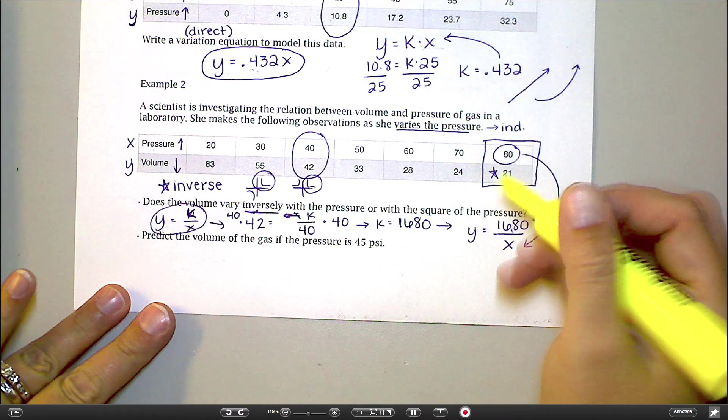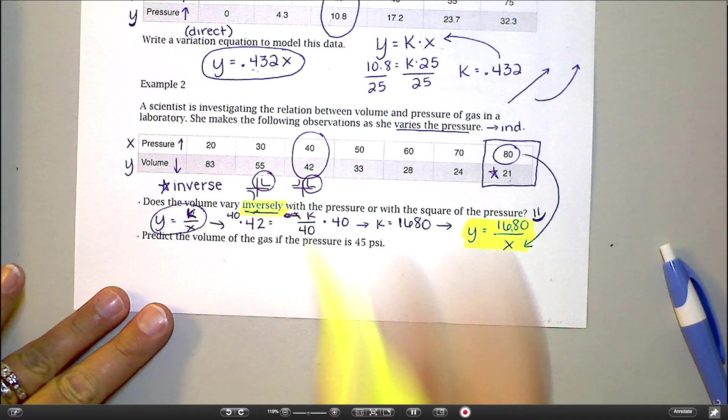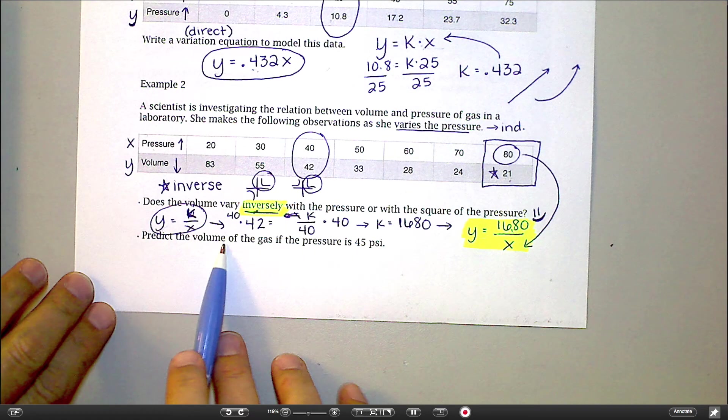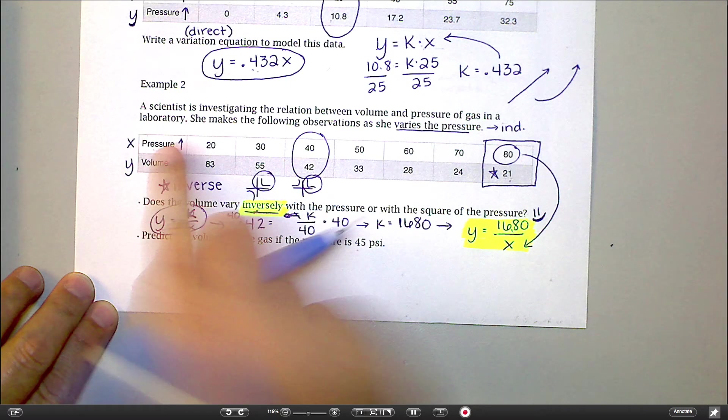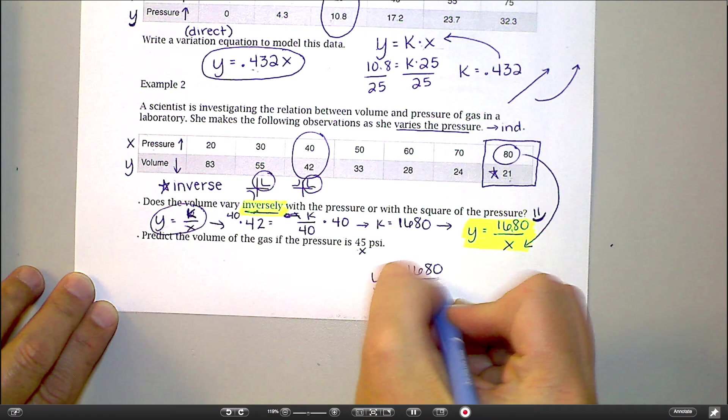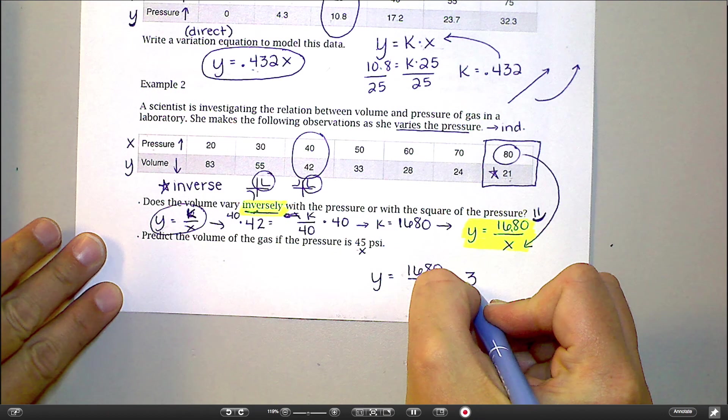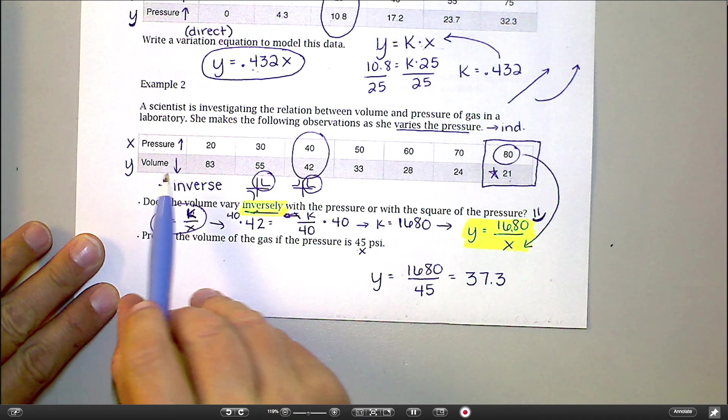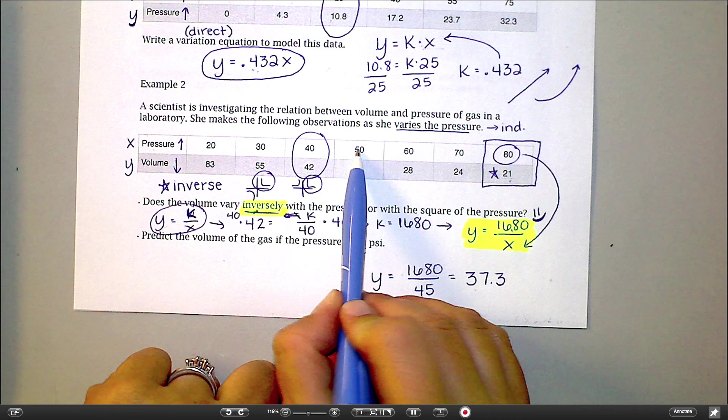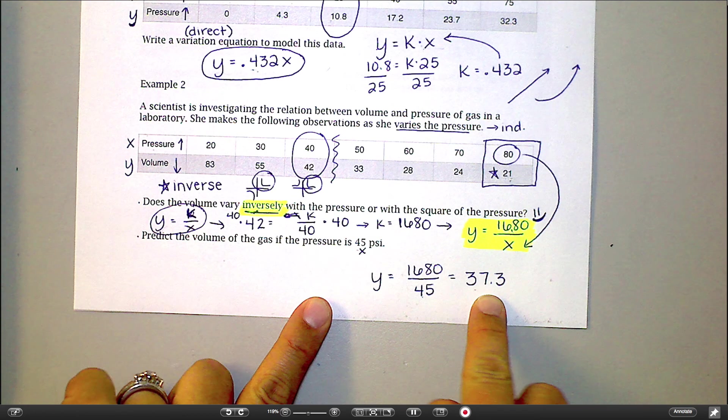So now we have our equation here. This is our equation that we ended up coming up with. And we can now, because this worked for another point, I can say it varies inversely, not with the square of the inverse. And so now to predict the volume of the gas, when the pressure is 45 psi, remember the pressure was my x. So I can plug in 45. And I can do 1680 divided by 45, which comes out to be 37.3. And I don't remember what our units was for volume, probably milliliters. But I should check in my table and make sure 45 would fall between 40 and 50. So I want to make sure this number makes sense. And it's somewhere between 42 and 33. So yeah, I'd say that answer is reasonable for my volume.